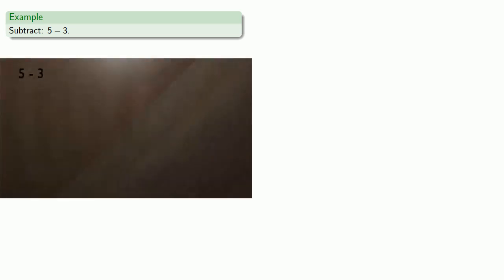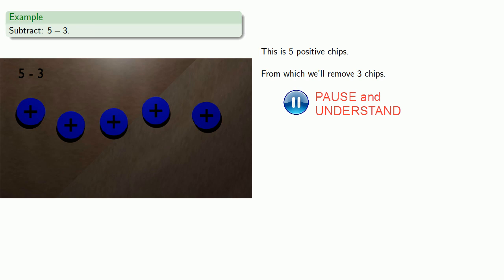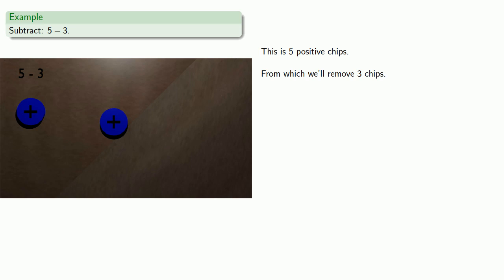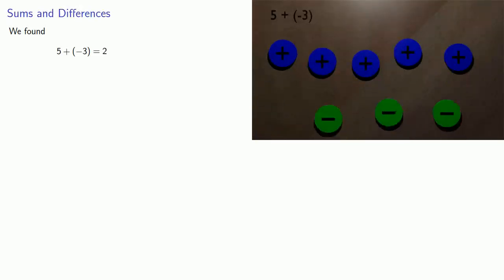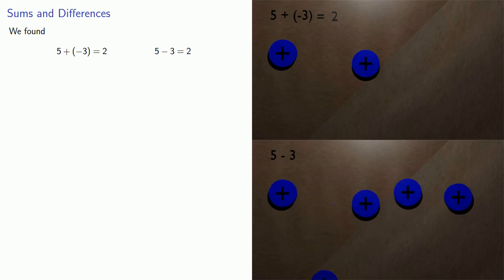What if we just do the subtraction five minus three? We can model subtraction by taking things away. So we have five positive chips, from which we'll remove three chips, and we'll have two chips left over. So five plus the additive inverse of three is two, and five minus three is also two.